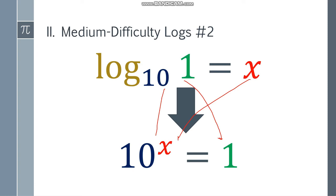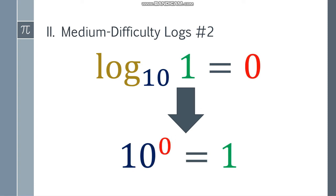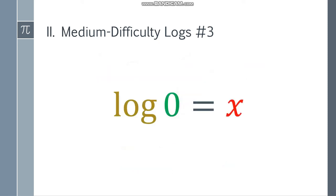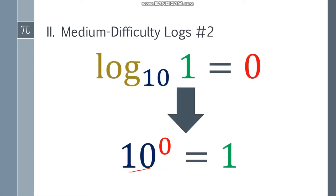What kind of exponent do you put here? The answer will be zero. As long as the base is a non-zero number, any base to the zero power is 1. So 10 to the zero power is 1, and the answer for log base 10 of 1 is equal to zero.